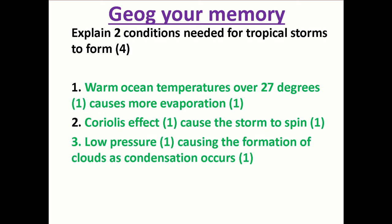The second point you can include is the Coriolis effect. The Coriolis effect is the rotation of the Earth. As the Earth rotates, it creates friction with the winds and the air above, causing them to rotate. This Coriolis effect causes your storm to rotate and spin, giving it that signature circular image seen in satellite photos. Without this Earth's rotation, your storm wouldn't be able to form or collect all of that energy together — it would just be a regular storm. Your first mark is for stating the Coriolis effect, and the second mark is for explaining why this leads to tropical storm formation.